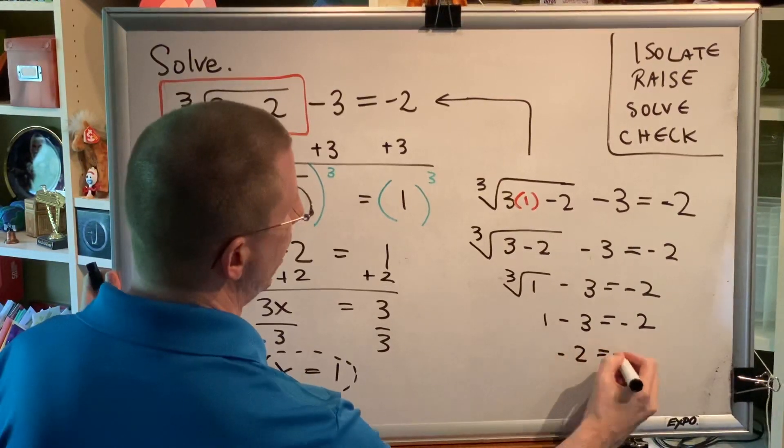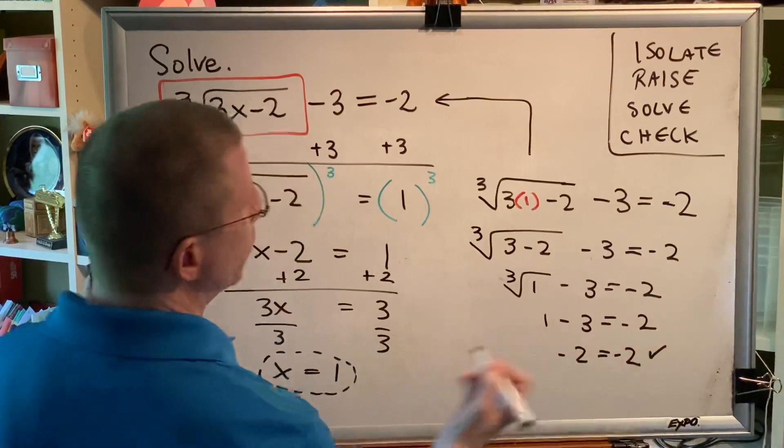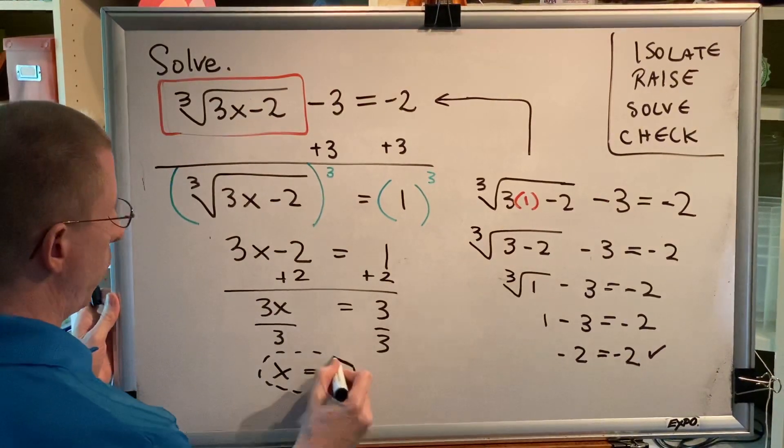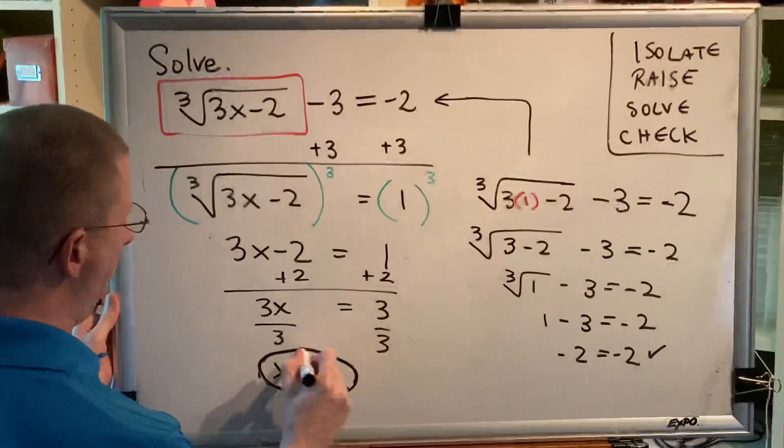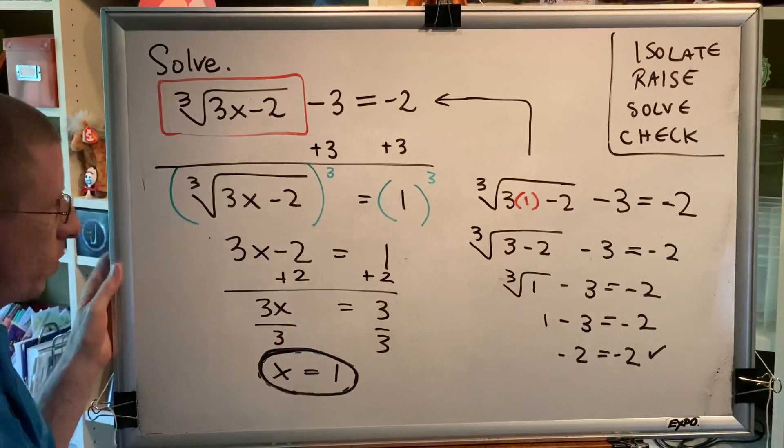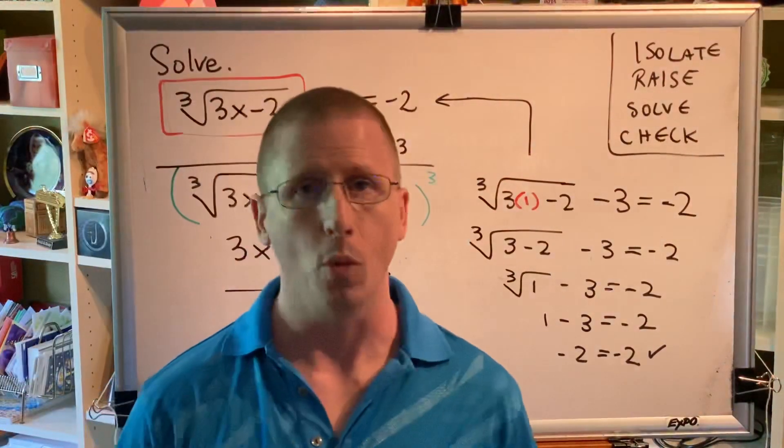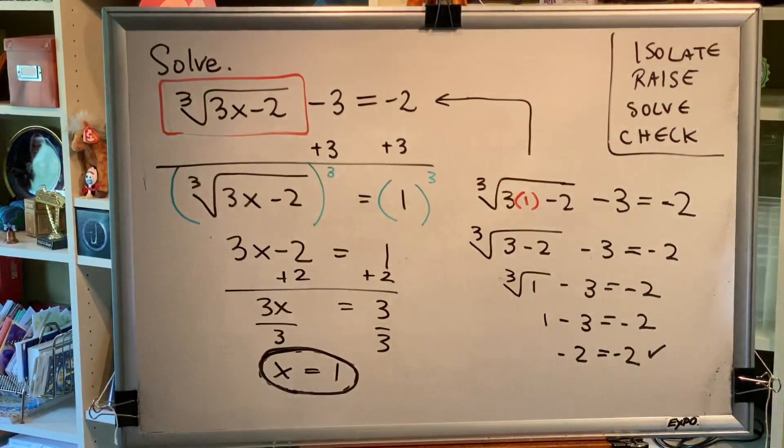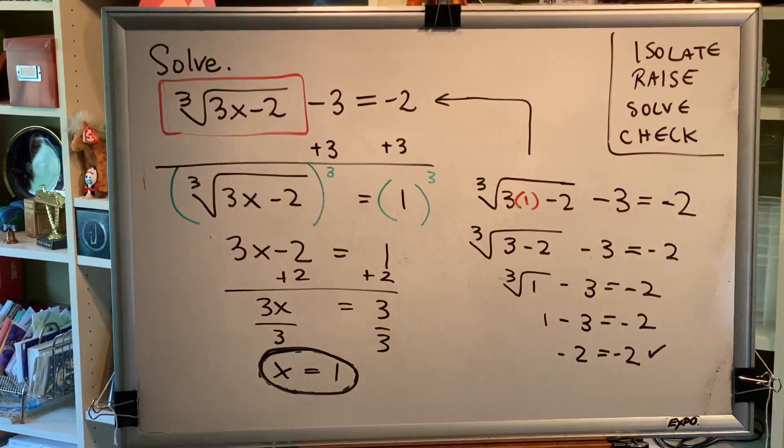We have negative 2 equals negative 2. The left side and the right side match, which proves that the answer that we thought might be our answer really is our answer. The answer to this problem is x equals 1.